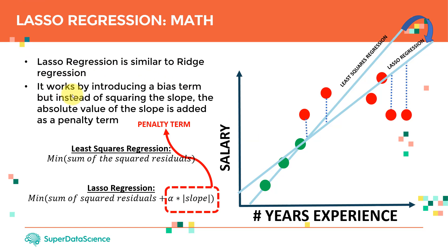Lasso regression works by introducing a bias term, but instead of squaring the slope, the absolute value of the slope is added as a penalty term. As you can see, this is least squares, which minimizes the sum of squared residuals. For lasso regression, we minimize the sum of squared residuals plus a penalizing term: alpha times the absolute value of the slope.